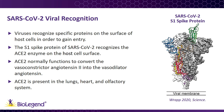In order for viruses to infect a host cell, they first must recognize a protein on the host cell's surface. This process is called viral recognition. In the case of SARS-CoV-2, the virus recognizes the enzyme angiotensin-converting enzyme 2, or ACE2, on the surface of lung alveolar cells. Specifically, the S1 spike protein of SARS-CoV-2 recognizes the enzymatic domain of ACE2.